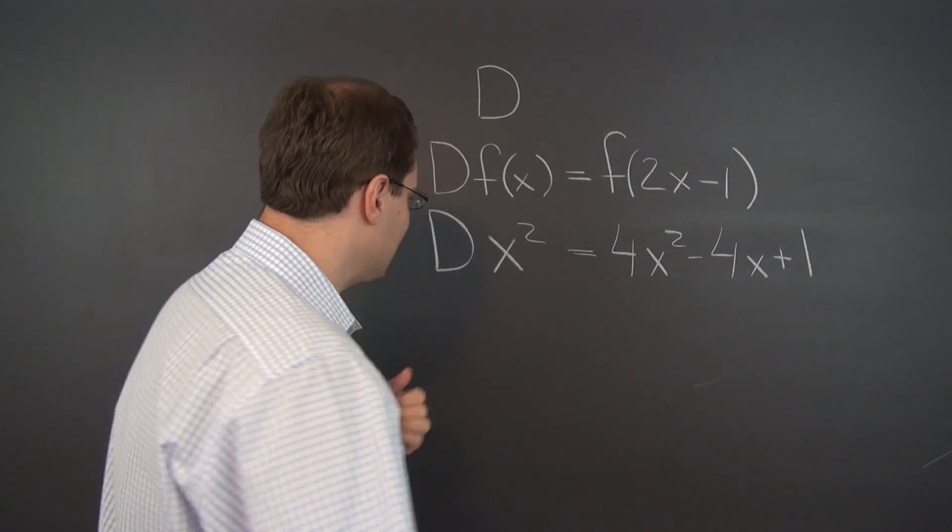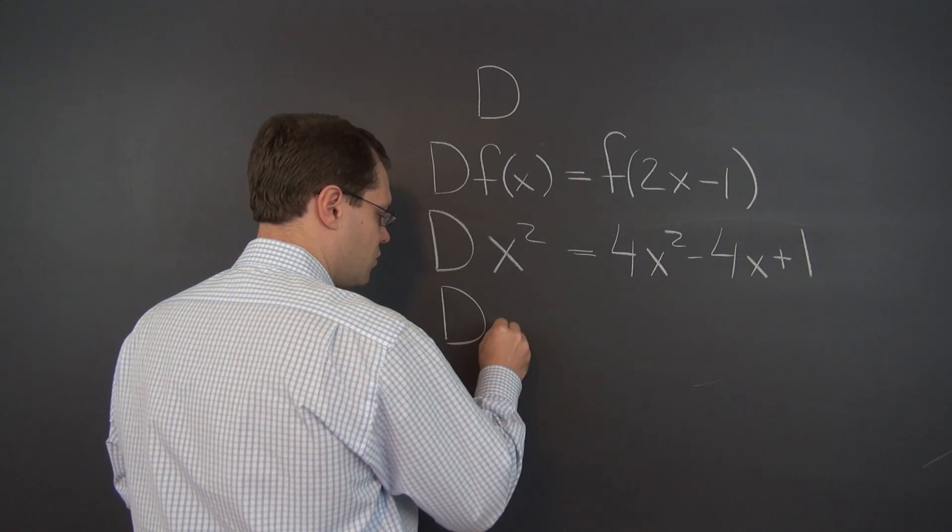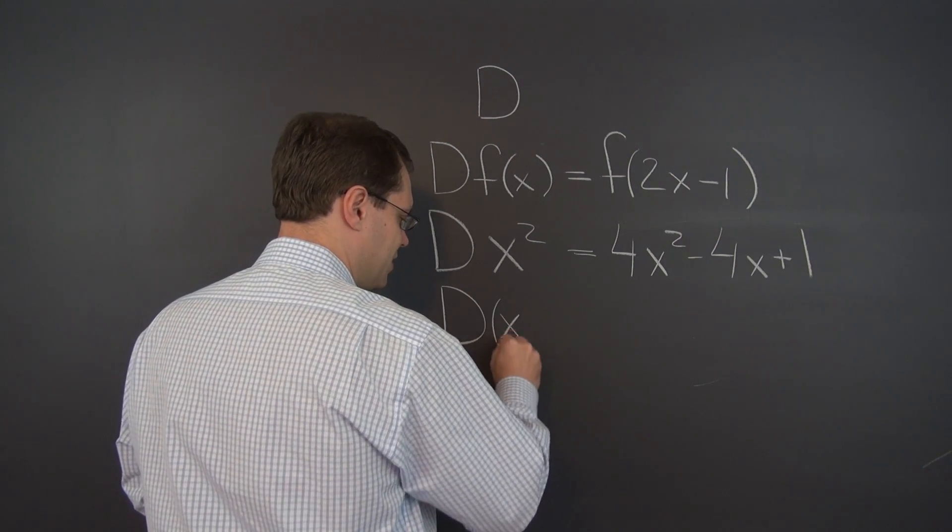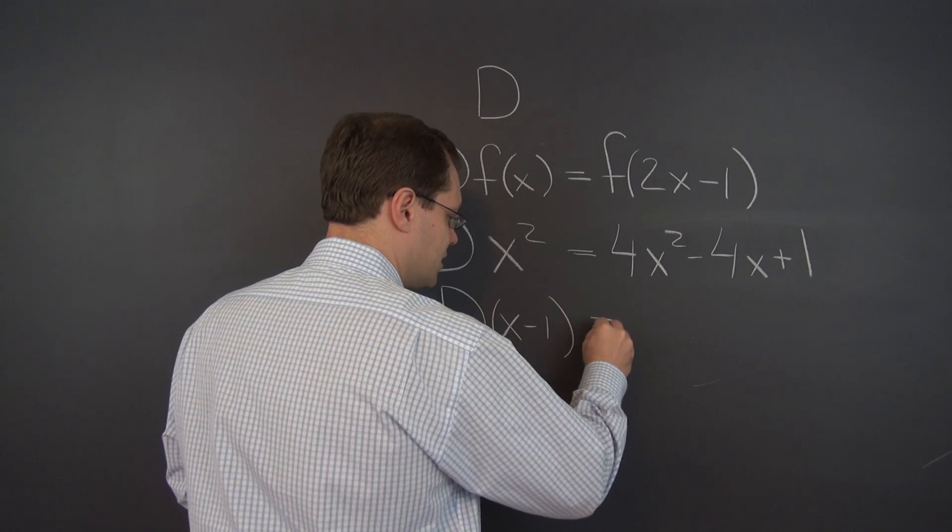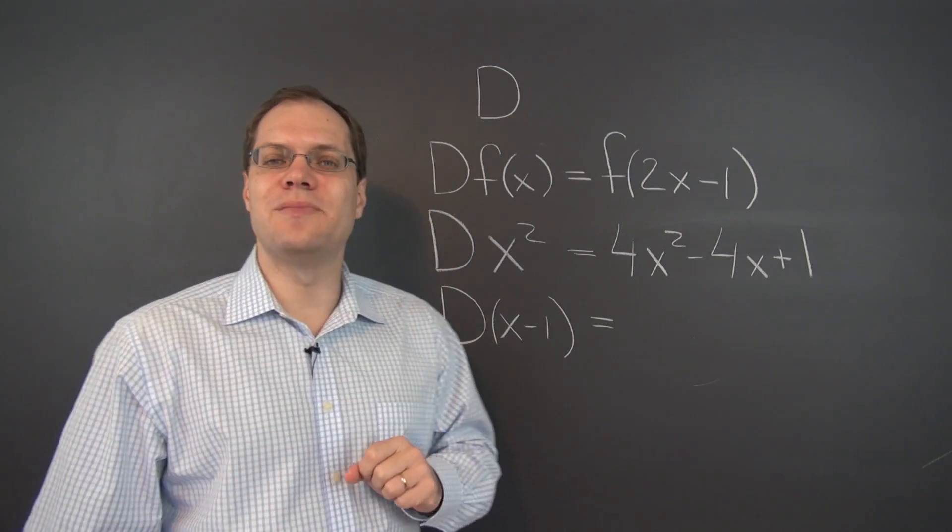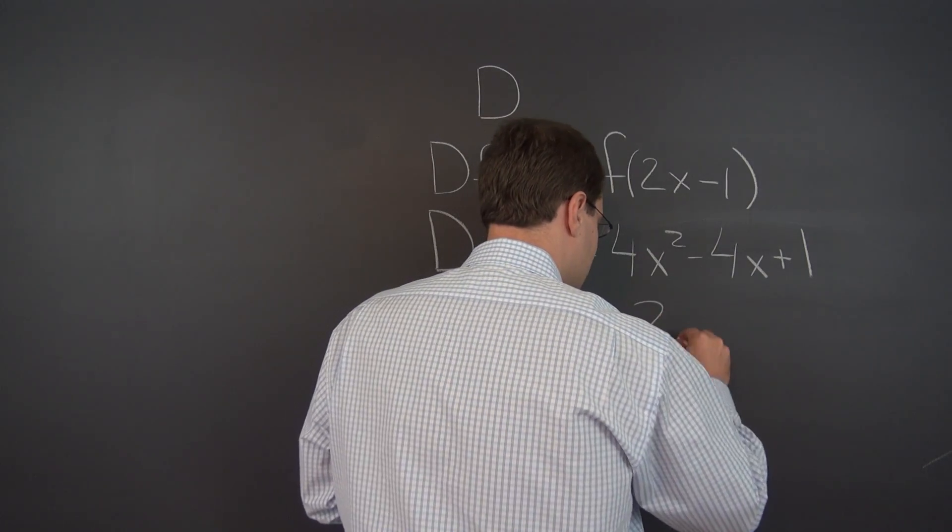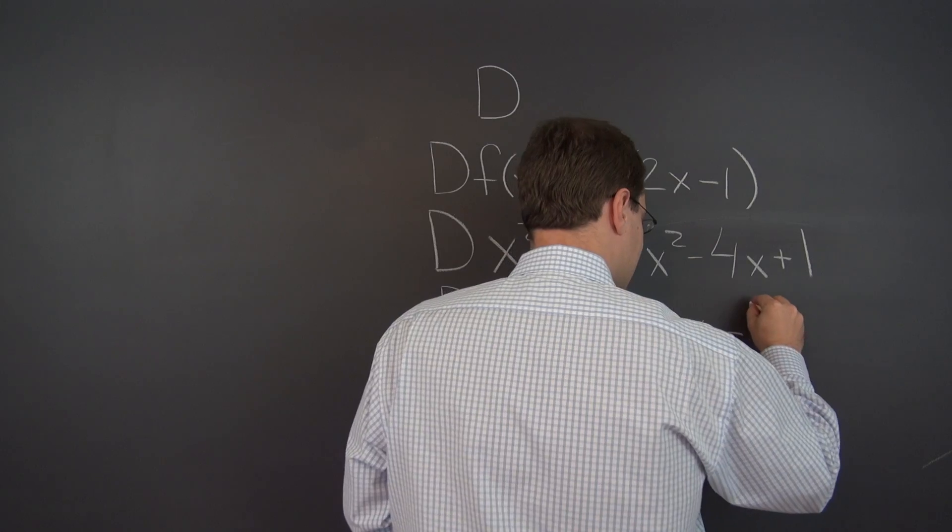Let's consider one more example. How about what it does to x minus 1? D of (x-1) equals, well, let's see, plug in 2x-1 instead of x, and we end up with 2x-2.